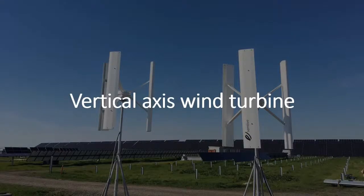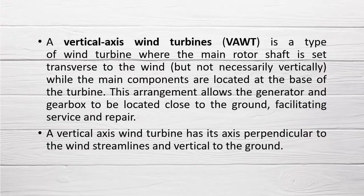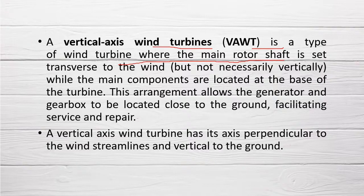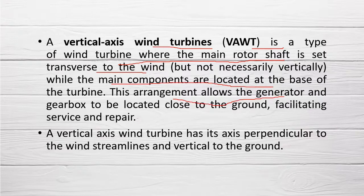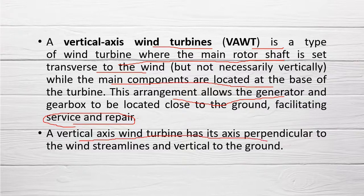Let's discuss vertical axis wind turbines in more detail. A vertical axis wind turbine, also known as a VAWT, is a type of wind turbine where the main rotor shaft is set transverse to the wind, while the main components are located at the base of the turbine. This arrangement allows the generator and gearbox to be placed close to the ground, facilitating service and repair. The VAWT has its axis perpendicular to the wind streamlines and vertical to the ground.